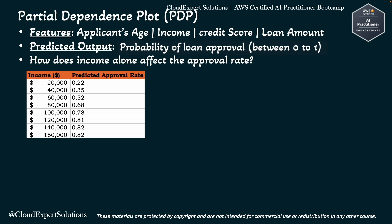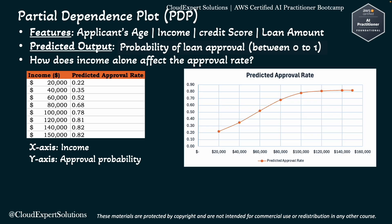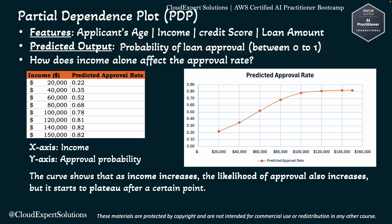We can create a PDP chart using the x-axis as income and the y-axis as approval probability. If we draw that plot, the curve shows that as income increases, the likelihood of approval also increases, but it starts to plateau after a certain point. We can interpret this as: income has a positive relationship with loan approval as expected, but there is a diminishing return — after 100K income, the approval rate stops increasing significantly.